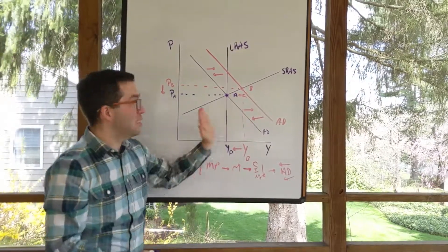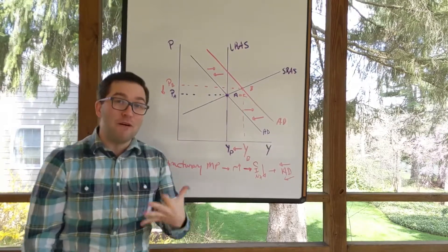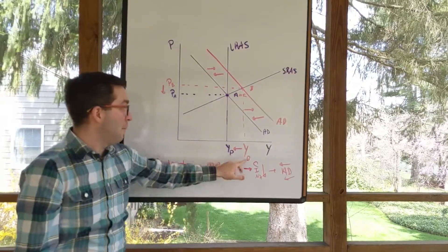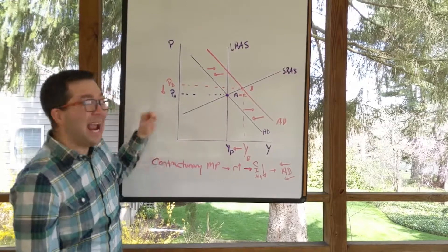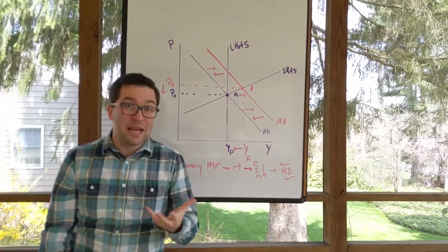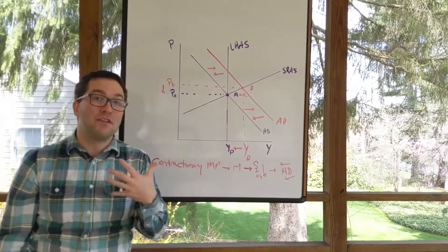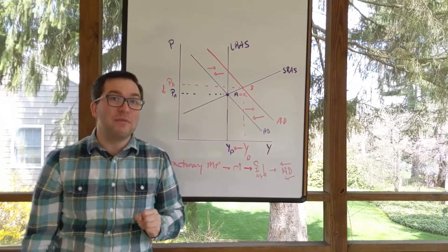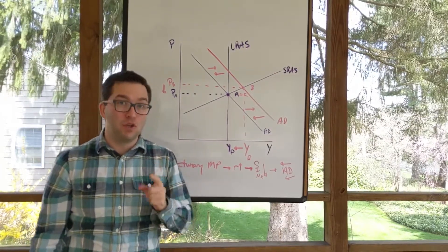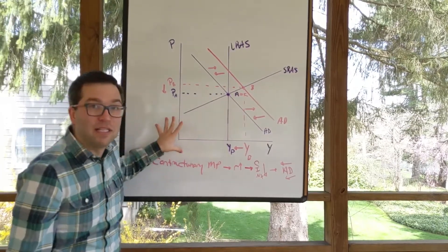So again, just like when there was an aggregate demand shift to the left and we were in a recession, the Federal Reserve is able to get back to potential GDP and stabilize prices at the same time. And that's what we call the divine coincidence - being able to satisfy both parts of the dual mandate when you're doing monetary policy.